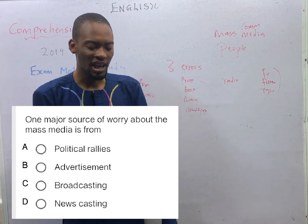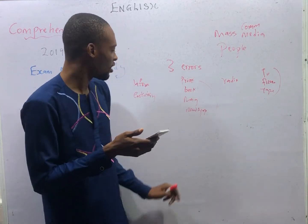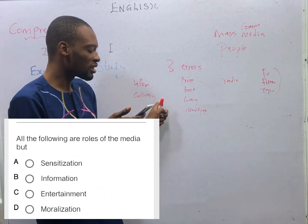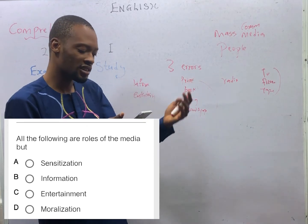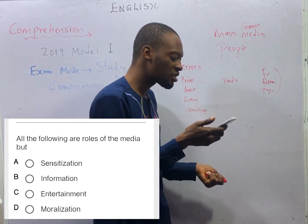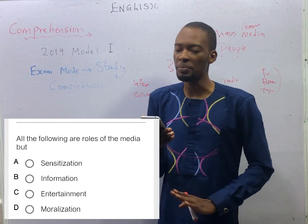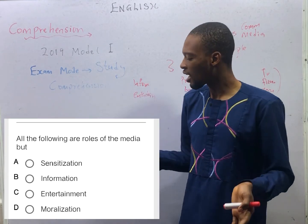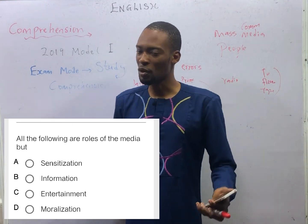All the following are roles of the media except: they are to inform, they are to entertain, and they are to sensitize. They are not for moralization. Moralization, according to the passage, is not a role of the media — it wasn't even mentioned at all. So option D is the correct option.